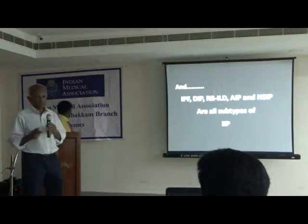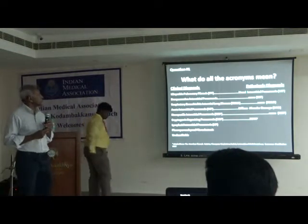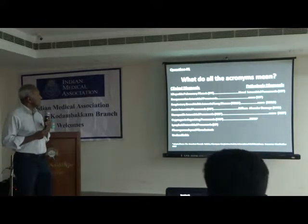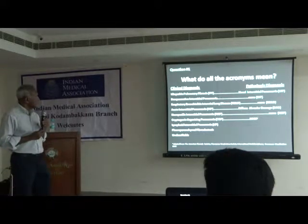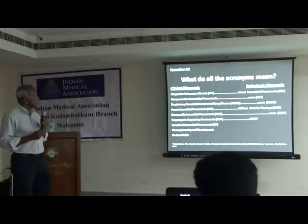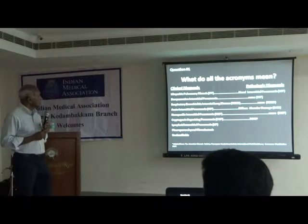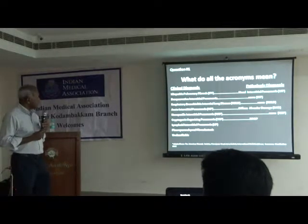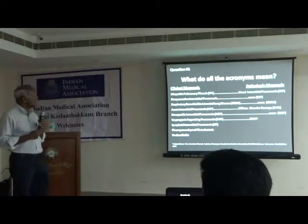What do these acronyms mean? IPF is idiopathic pulmonary fibrosis, with the pathologic diagnosis of UIP. Then there is desquamative interstitial pneumonia, respiratory bronchiolitis interstitial lung disease, acute interstitial pneumonia — also called diffuse alveolar damage by the pathologist — non-specific interstitial pneumonia, cryptogenic organizing pneumonia (called BOOP by the pathologist), lymphoid interstitial pneumonia, pleuroparenchymal fibroelastosis, and unclassified.